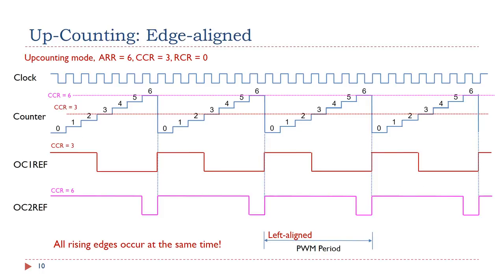In the up-counting mode, when multiple PWM signals are generated by the same timer, all rising edges occur at the same time — that is why the up-counting mode is edge-aligned. This example shows the PWM output when CCR is 3 and 6. All rising edges of the PWM signals are aligned with the overflow events of the timer counter. More specifically, the PWM outputs are left-edge aligned because all pulses are aligned to the left side of the PWM period. The outputs go to their active state at the beginning of the period, stay on for an amount of time determined by their duty cycle, then turn off for the remainder of the period.